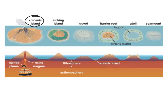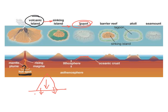Once a volcanic island moves past the hot spot, it can take three different paths. The first is becoming a sinking island — the huge volcano sitting on oceanic crust adds weight, pushing the crust down so the island itself sinks. If weathering and erosion continue over time, the top flattens out and it becomes a flat-topped underwater mountain called a guyot.